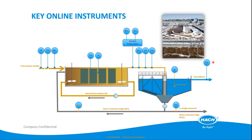At the outlet of the plant we need to measure TSS, TOC as organic compound, nitrate, ammonium, phosphate, and pH. We also need to measure the sludge level. For the sludge draw we need to measure TSS to determine sludge density, and we use the Solitax to measure the sludge. These are all the parameters we need to measure for a wastewater treatment plant.